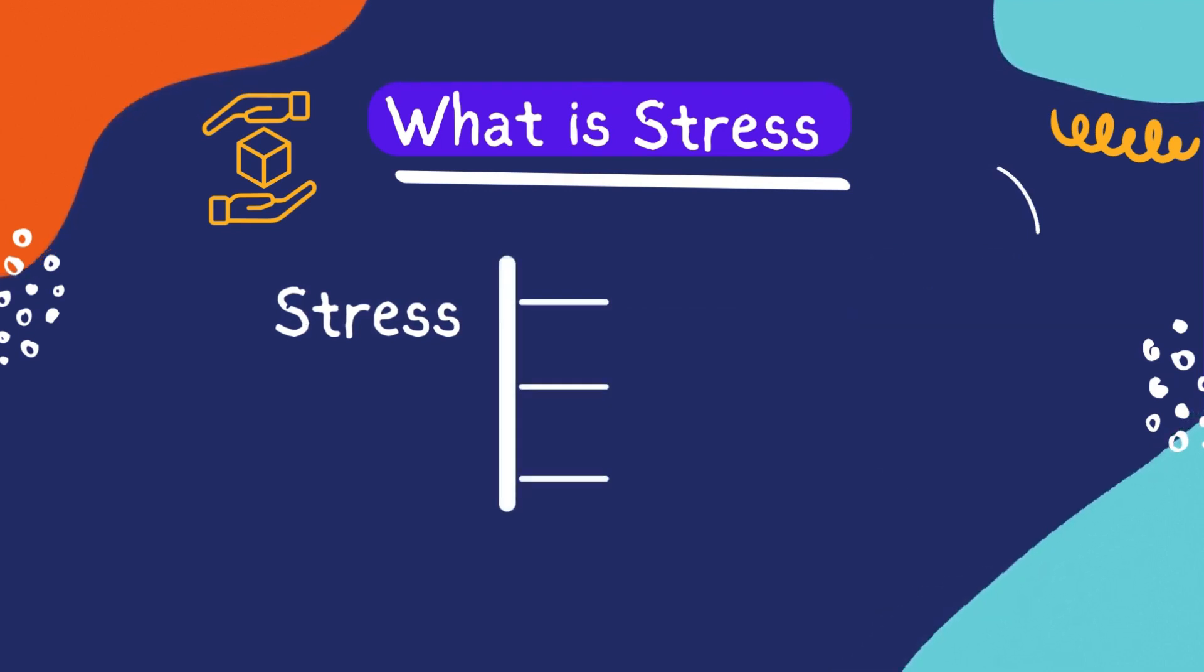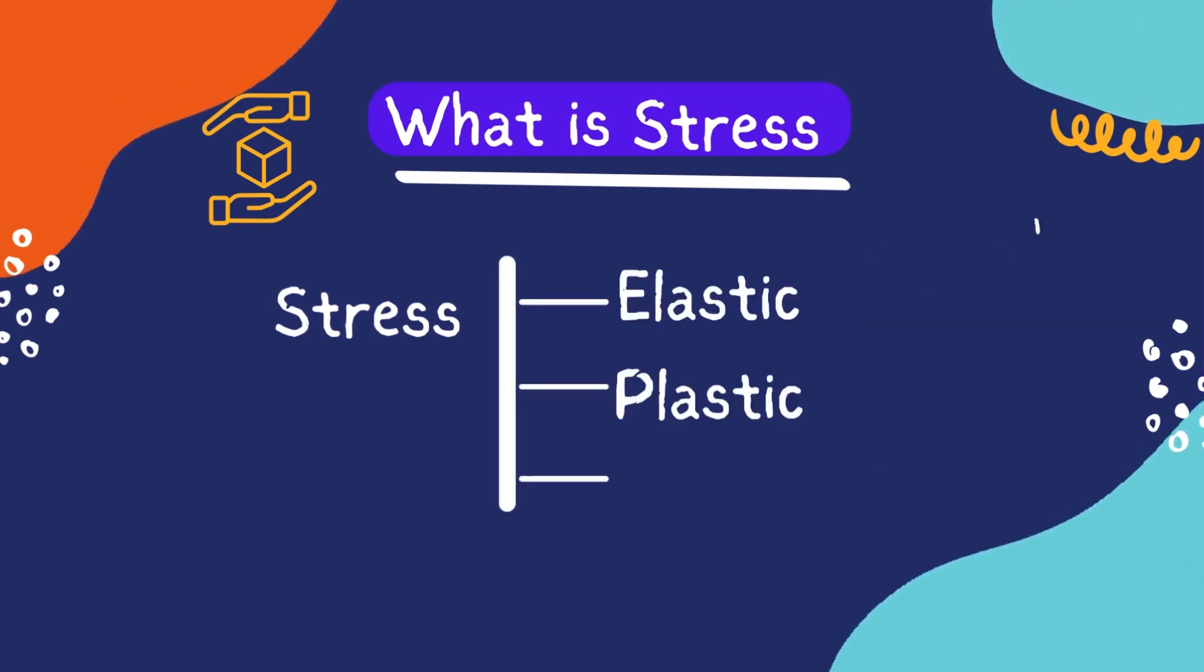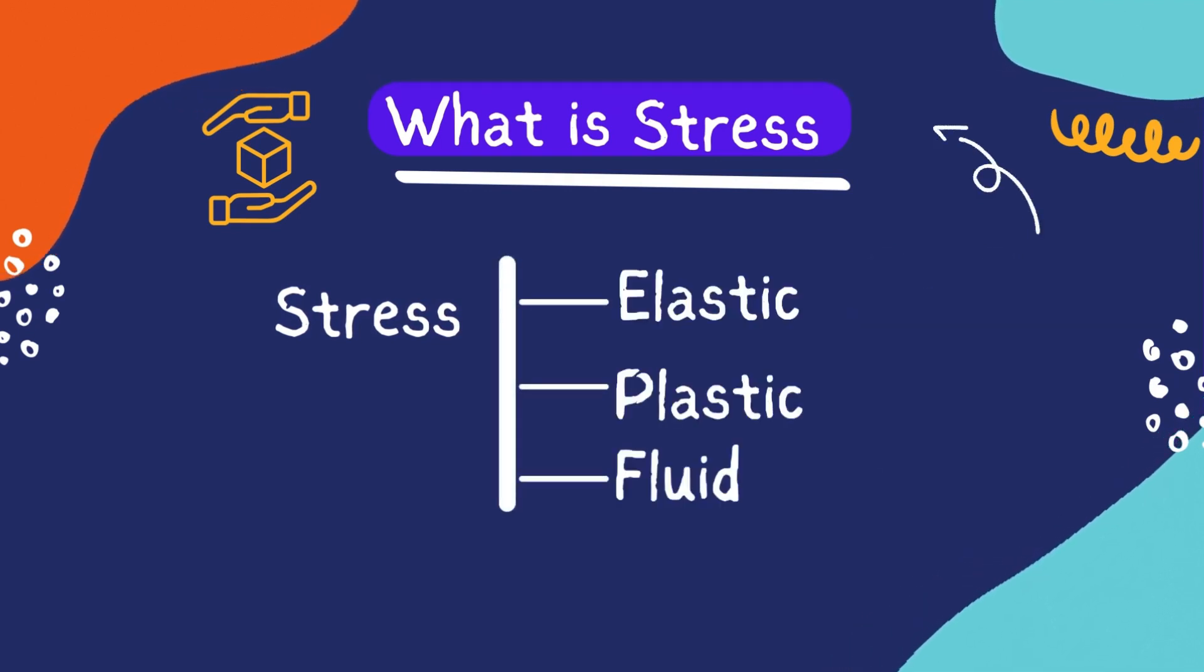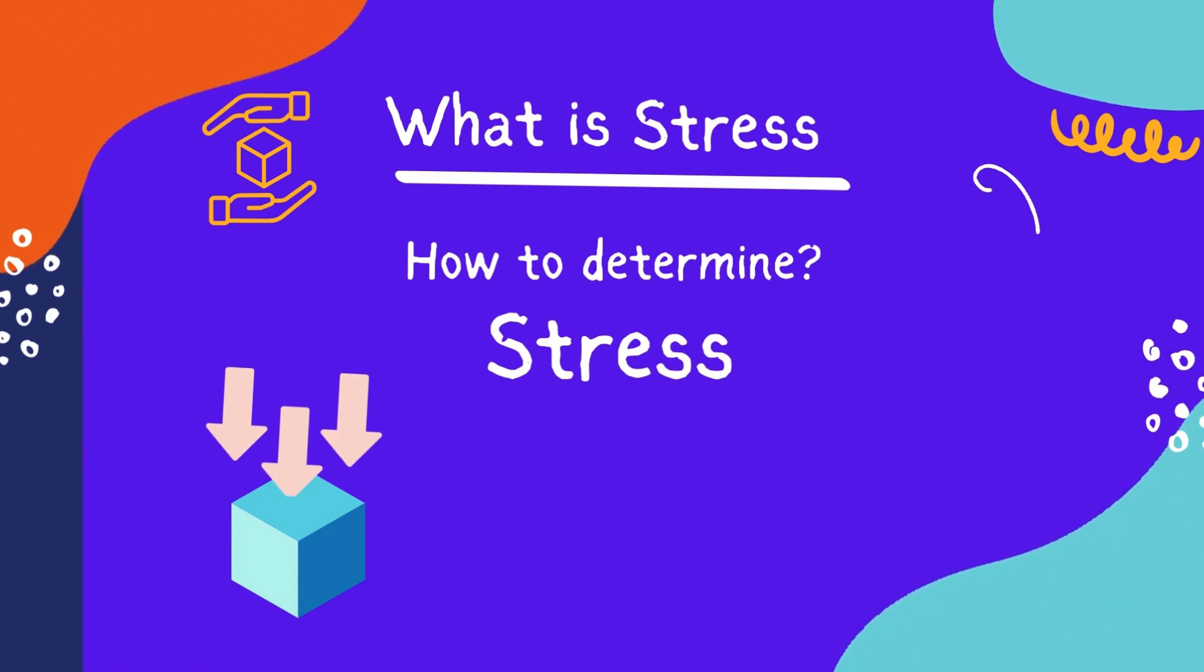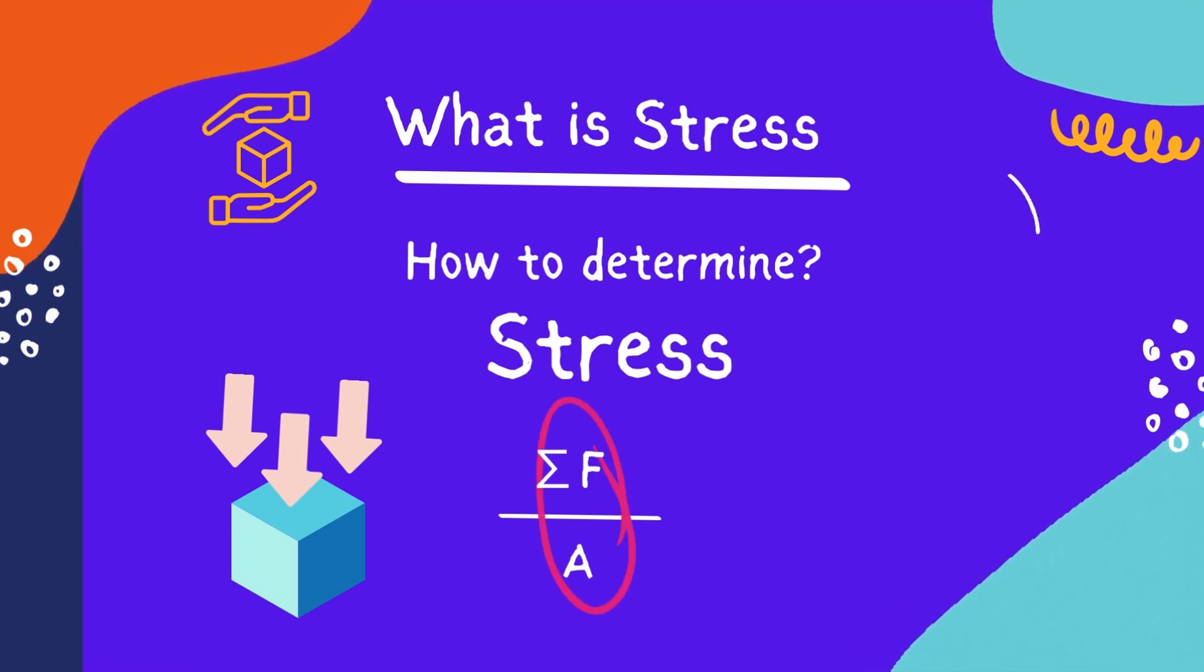So what do you do to determine stress? Well, pretty simple. You just take the sum of all forces acting on an object and divide that by the area of the object where force is acting, and this will give you a measure of stress. So applied stress, or sigma, equals summation of forces divided by unit area. Stress has a unit of newton per meter squared.